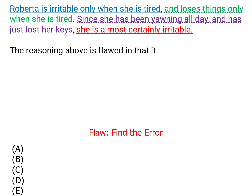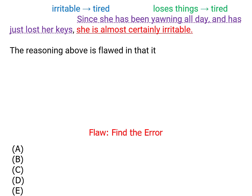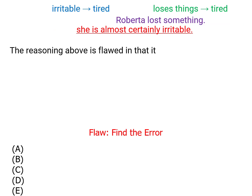This seems like formal logic, and it's because it is. We could take each of the first two statements and make formal logic shorthand out of them. Roberta is irritable only when she's tired, and she loses things only when she's tired. She's been yawning all day — which seems to come out of nowhere — but the important thing is she just lost her keys. So the conclusion is that Roberta is irritable.